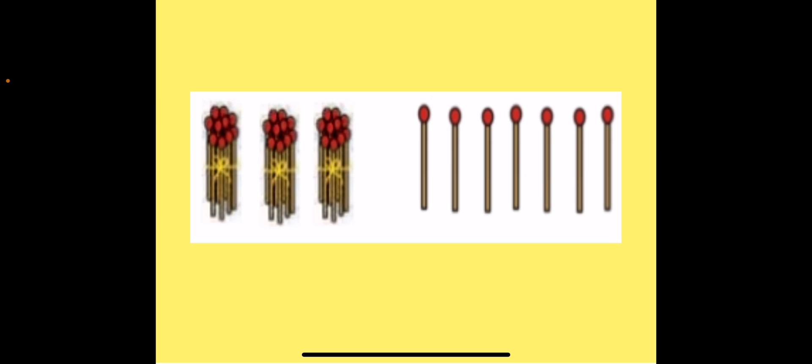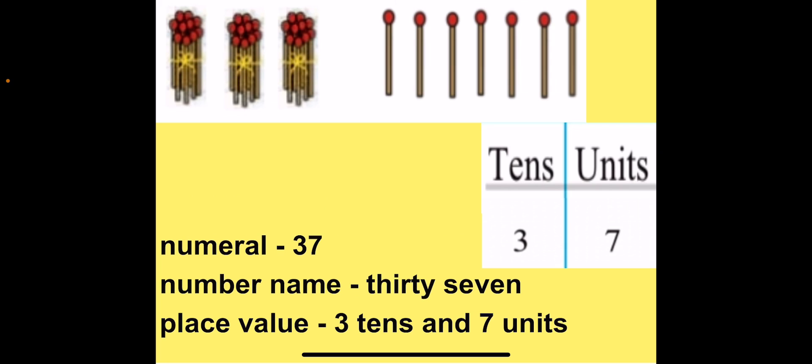When we add 1 more unit to the 6 units we get 3 tenths and 7 units. So 3 tenths and 7 units give us the next number, that is 37, where 3 is in tenths place and 7 is in units place. The number name for 37 is THIRTY-SEVEN. The place value for 37 is 3 tenths and 7 units.